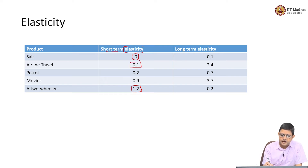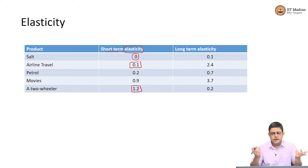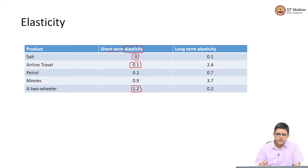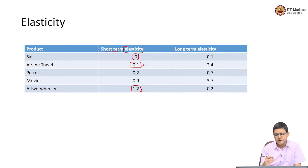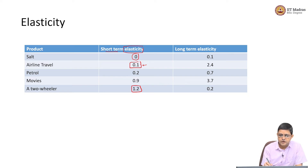Now, let us say there is an emergency meeting I have to attend and I just have to take a flight — there is no alternative. In a short-term emergency situation, even if the prices are higher, if the situation requires that I travel, I will have to travel. So airline travel may have a very low short-term elasticity.